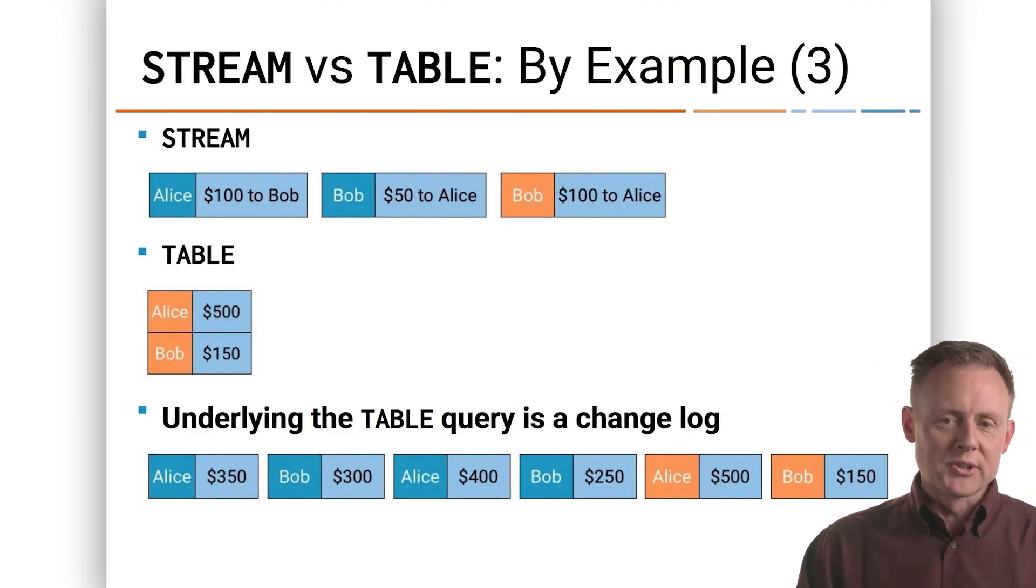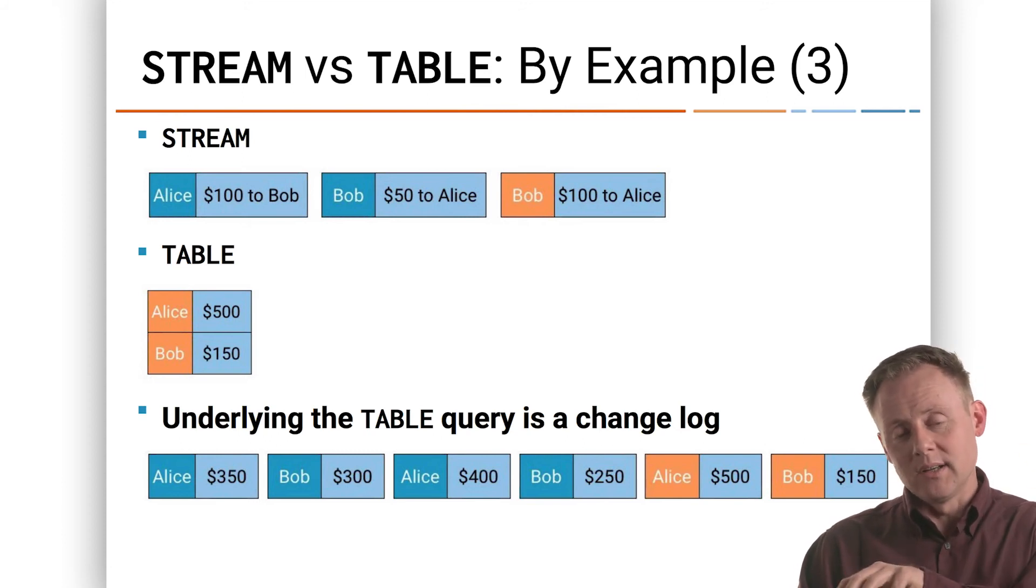So the final transfer is Bob giving another $100 to Alice. Alice now has $500, Bob now has $150. That's the current state of the world there. And we create two new change log entries, turning those table mutations back into events in another stream, this change log stream.